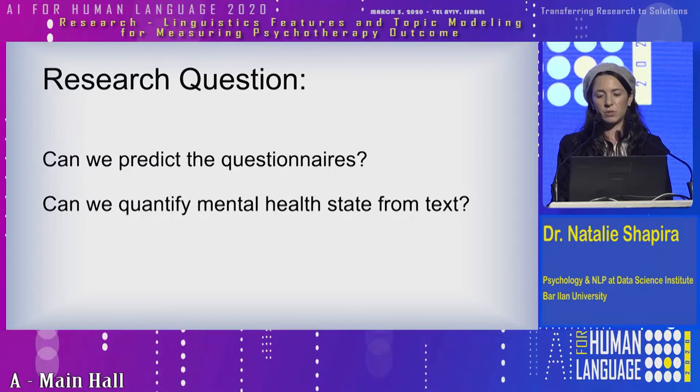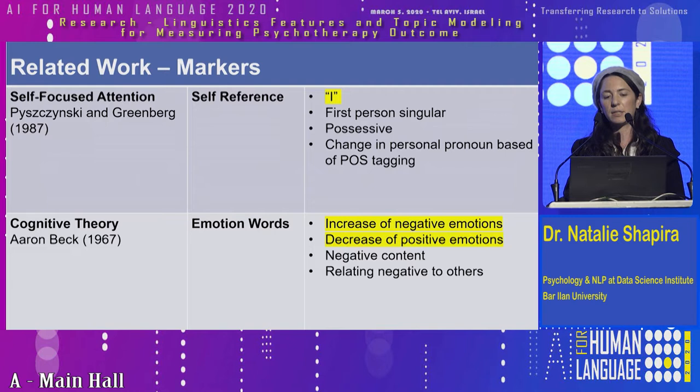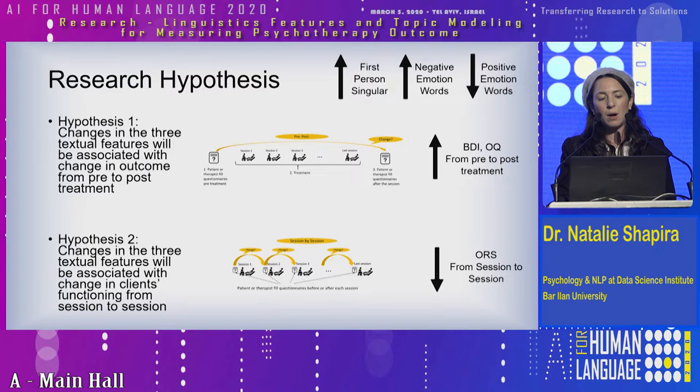Now that we have data, let's use it. Our first research question was: can we predict the questionnaire? Can we quantify mental health states from text? When we went to the literature, we found that there are three linguistic features that appear across many studies — the word 'I', the self-reference, and emotion words, positive and negative emotions. Our research hypothesis was that those three linguistic features will correlate with the questionnaire from pre-treatment to post-treatment, and with the questionnaire session by session.